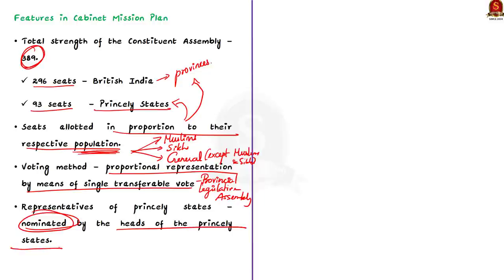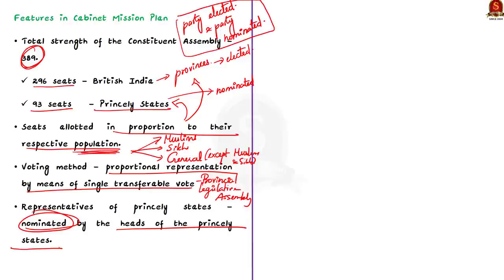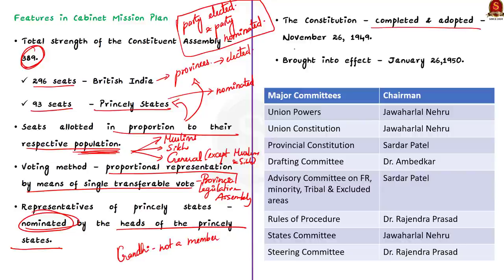The representatives of princely states were to be nominated by the heads of the princely states. Thus the Constituent Assembly was a partly elected and partly nominated body — not directly elected on the basis of adult franchise as declared by Jawaharlal Nehru. An important fact: Mahatma Gandhi was not a member of the Constituent Assembly. After three years of hard work, the Constitution was completed and adopted by the Constituent Assembly on November 26, 1949 — that is why Constitution Day is celebrated every year on November 26.